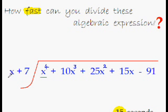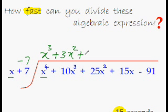x^4 divided by x is x^3 minus 7x^3 plus 10x^3 is plus 3x^2. And we get the second term of the answer. Now minus 21x^2 plus 25x^2 would be plus 4x. And this is the third term of the answer.